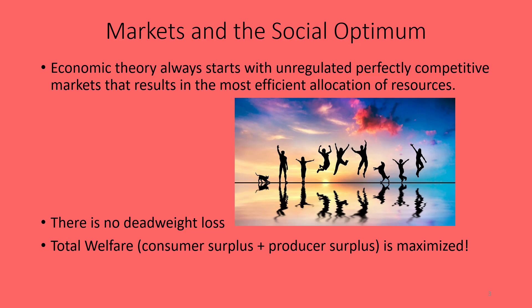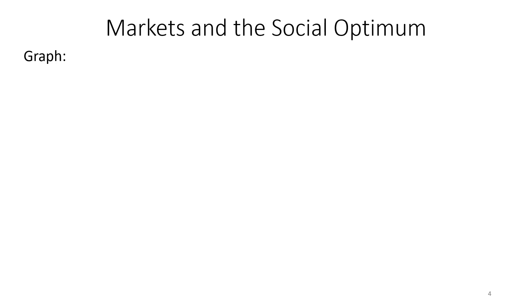Dead weight loss is a situation where some inefficiency exists — we're either producing too many or too few products so that we're not maximizing total welfare. Total welfare, which is consumer surplus and producer surplus added together, is as large as it can possibly be when we are in equilibrium in these unregulated, perfectly competitive markets. Let's revisit that graph before we start throwing in externalities.